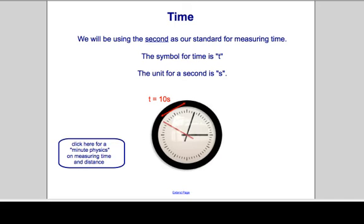The basic standard for time is the second, and the symbol that we use is t. So in this case, the time required for this second hand to sweep through that red arrow would be about 10 seconds. So t is equal to time. That's the symbol. And seconds are the units. So s is the unit symbol for seconds.